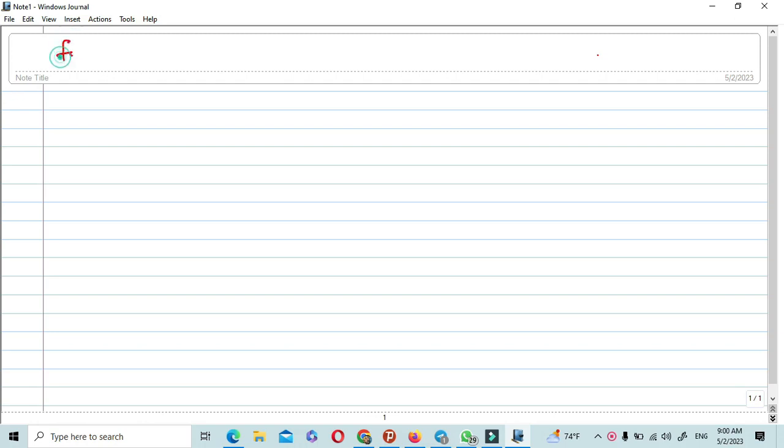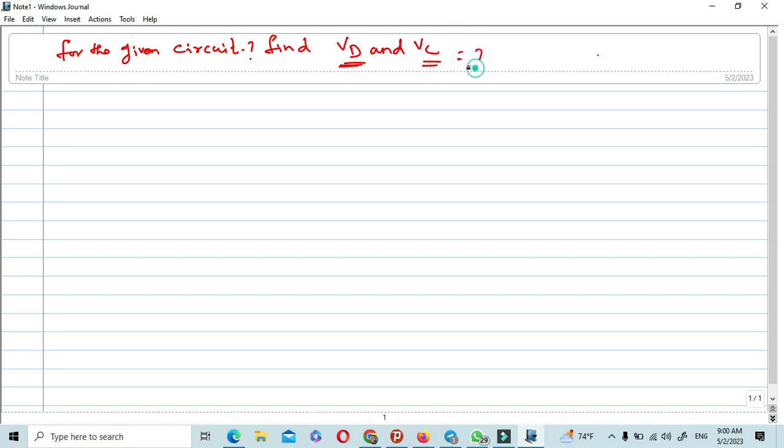For the given circuit, find VD and VC. VD means drain voltage, VC means collector voltage. That means you have to use both JFET and BJT circuits.